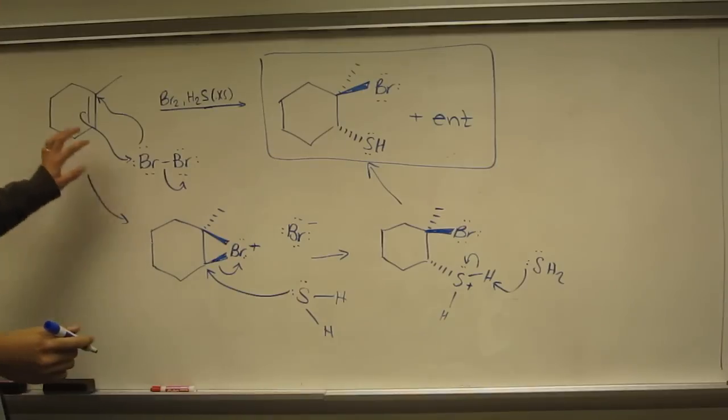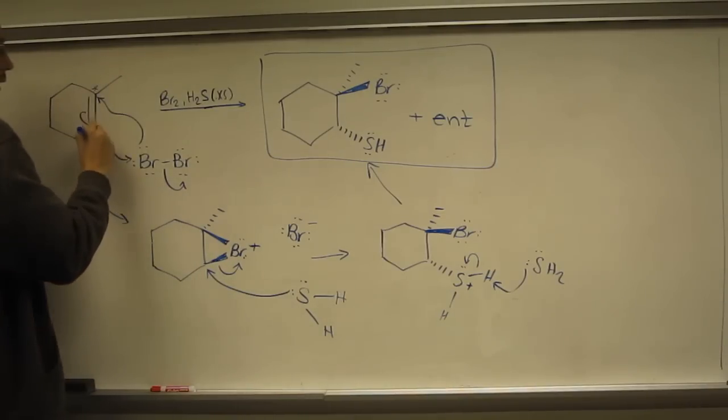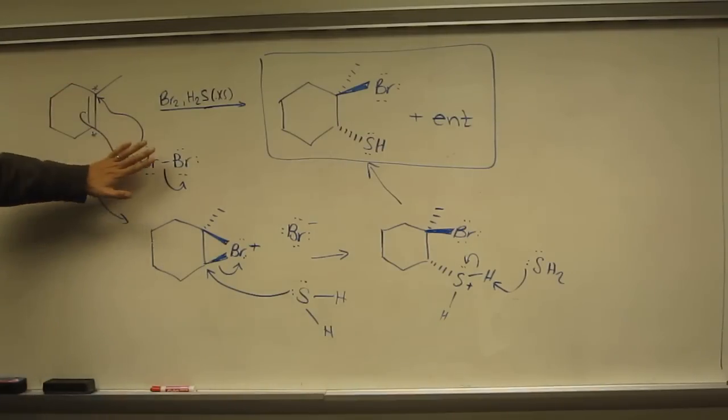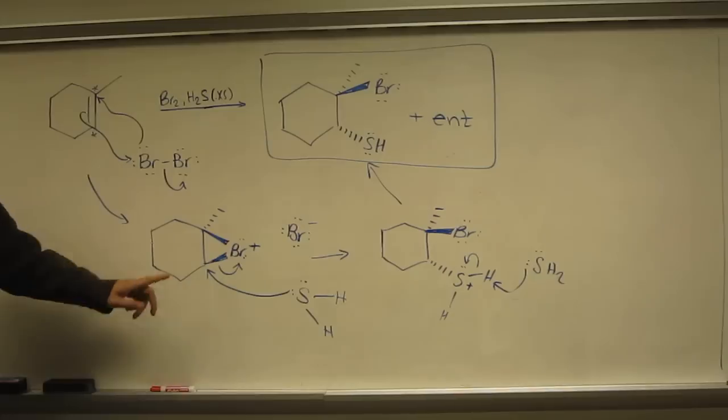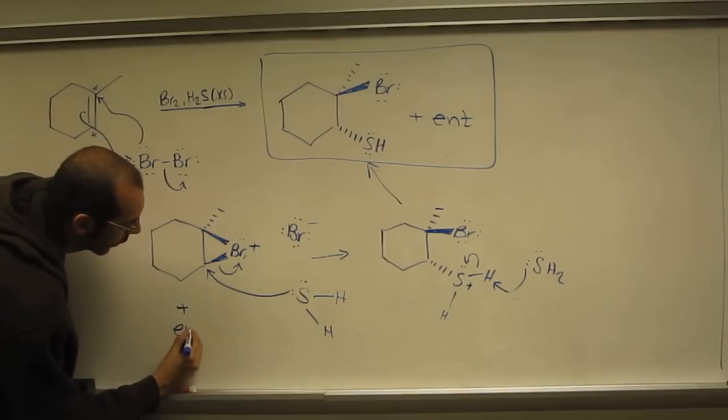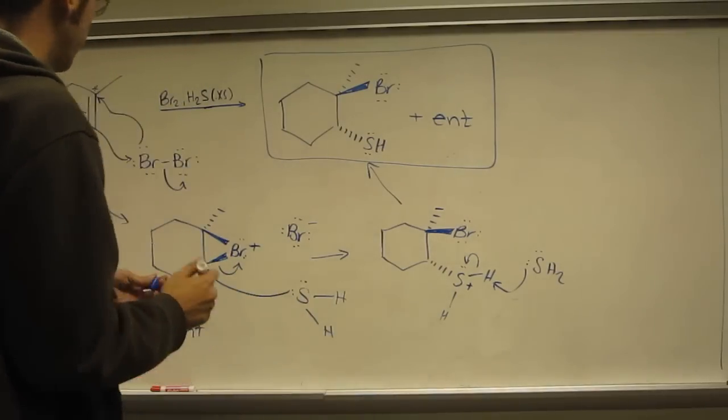So why the enantiomer? Because this here and this here are sp2 carbons. So the bromine can attack from this front or top face or the back face like that. So you'll get an equal amount of the enantiomers here. And of course, then that's going to give you that enantiomer.